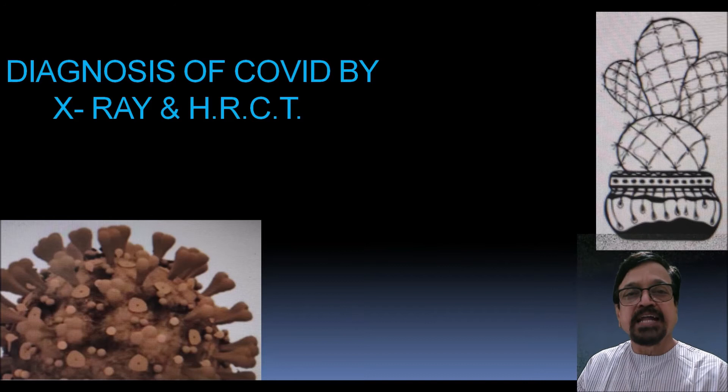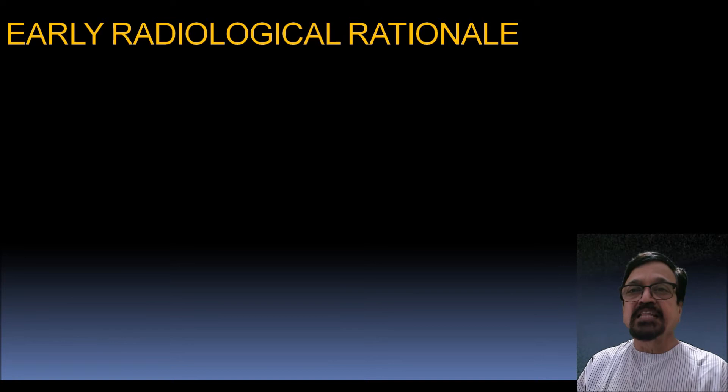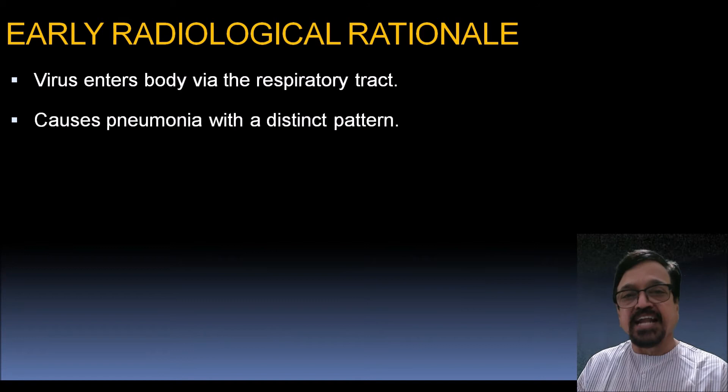Coming to the diagnosis of COVID: as we have seen, first is HRCT, then X-ray, then RT-PCR. The virus enters the body via the respiratory tract and causes pneumonia with a distinct pattern — the COVID pneumonia pattern is distinct. These lectures are made to cover that in detail, including the theoretical aspects and the important signs.